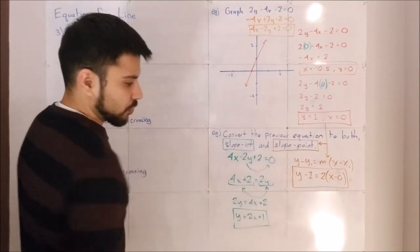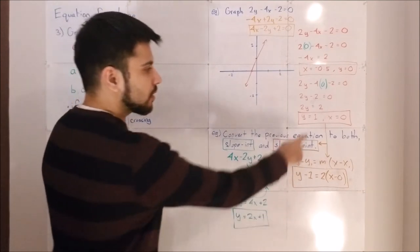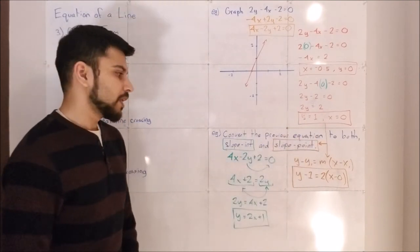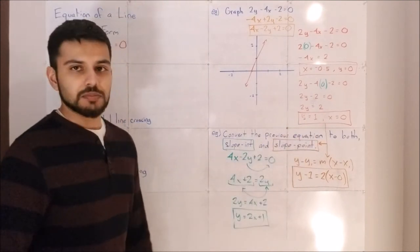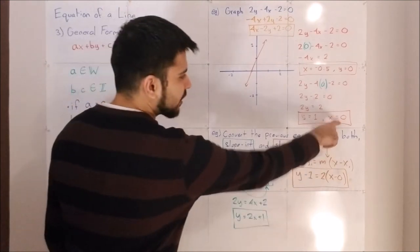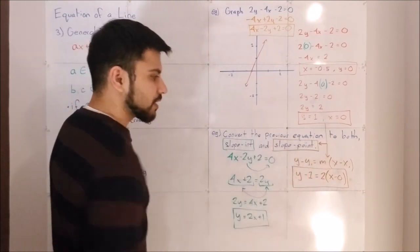Well, y is just y. Y minus my y-value, which was 1. So y minus 1 equals m times x minus my x-value. My x-value I chose was this point at 0, so x minus 0.